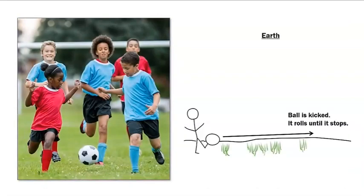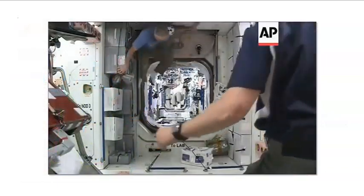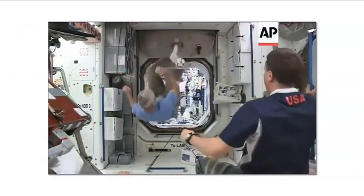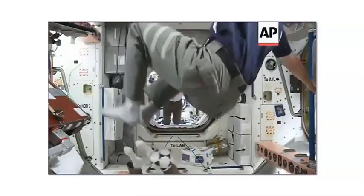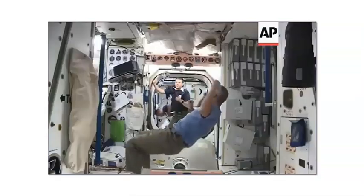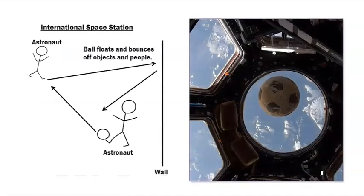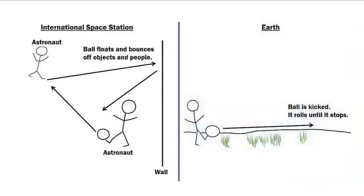Last time we were together, we created an initial model of what it looks like when a soccer ball is kicked on earth. We also watched a video clip of astronauts playing soccer on the international space station. We noticed that the soccer ball floats in space and bounces off the walls. We created an initial model of what playing soccer is like in space on the international space station. In space, a soccer ball floats and bounces off objects and people.